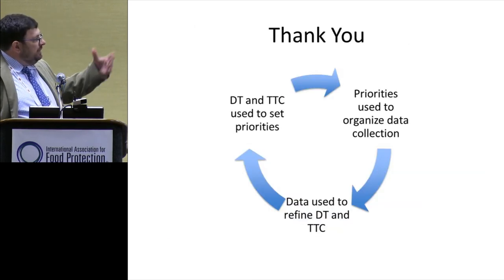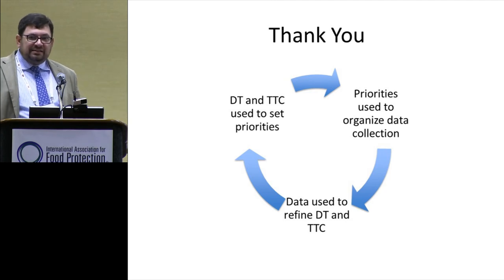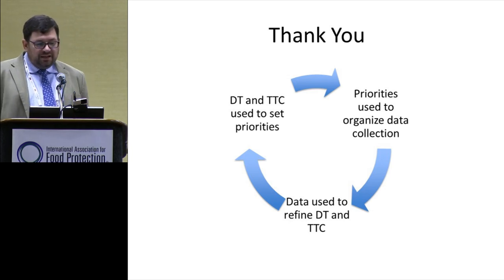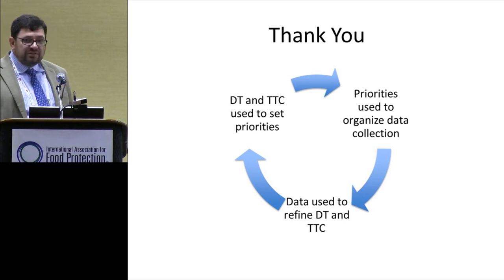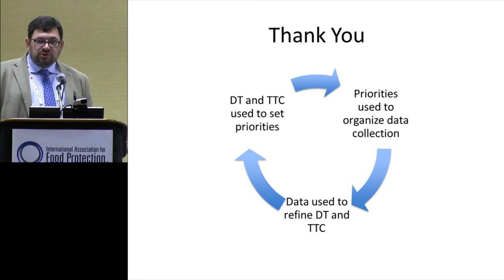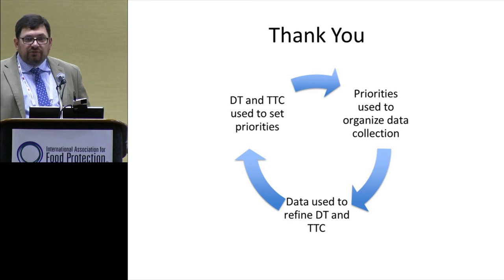At the beginning of my talk, I noted this conundrum: how do you prioritize without test data, and how do you collect test data if you haven't prioritized? The nice approach here is that the decision tree and the TTC concept have been very elegantly used to help set priorities, which have then been used to organize data collection. That data has been used for flavor safety evaluation, and is now also being used to refine the decision tree classifications as well as potentially the threshold of toxicological concern concept downstream. This is a long-range exploratory project that will stay that way for quite a while — it's a huge task, but an important one, and this feedback loop will continue for the long term for flavors.